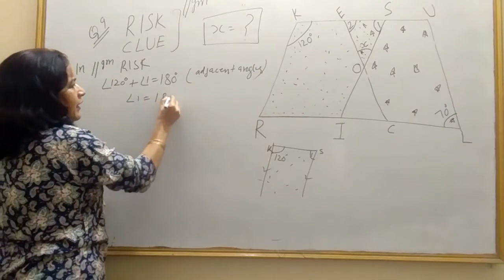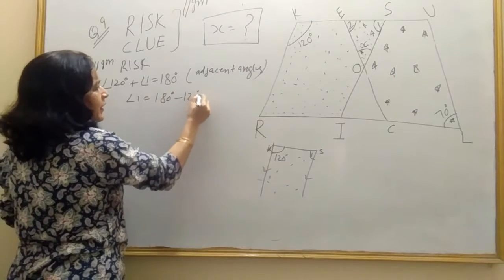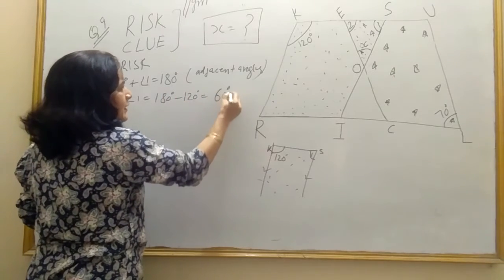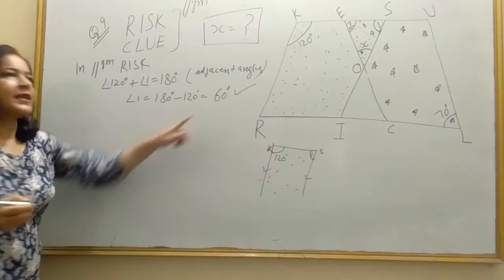Sum of adjacent angles is 180 degree in a parallelogram. I have already written parallelogram risk. So angle 1 will be 180 minus 120 degree, that is 60 degree. You find angle 1, 60 degree.